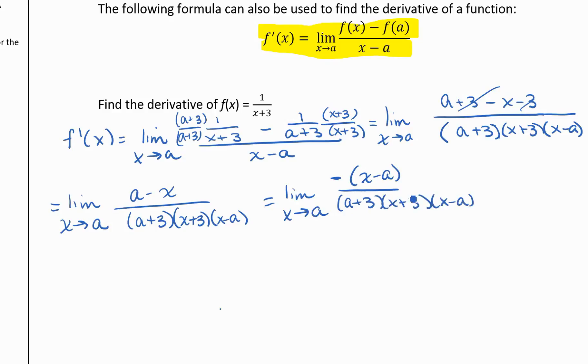So now we're able to cancel out those factors. That leaves us with a 1 in the numerator. So we have negative 1 over a plus 3, x plus 3. And we want this as x goes to a, so we're just going to plug in an a for our x. So our derivative is negative 1 over a plus 3 times a plus 3, so we can write that as a plus 3 squared.